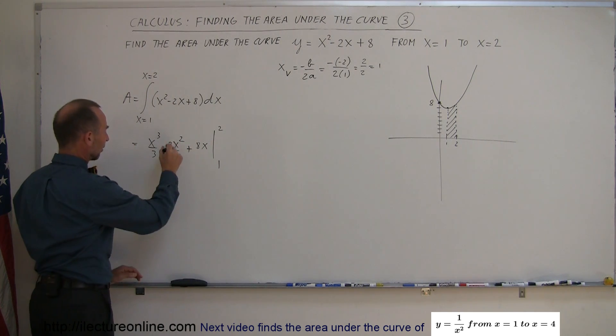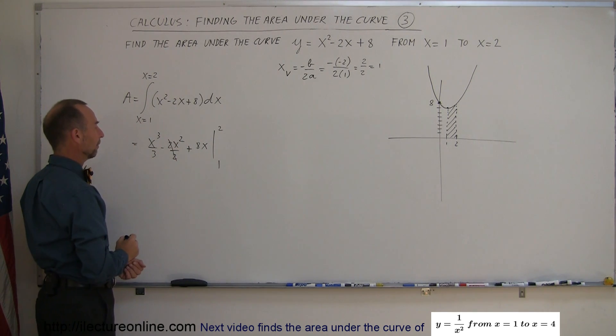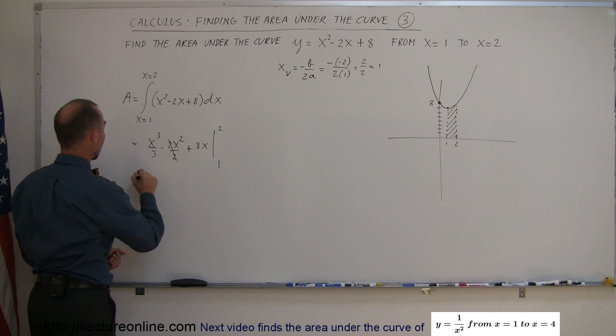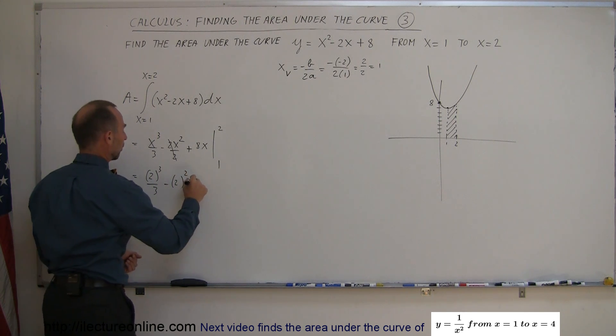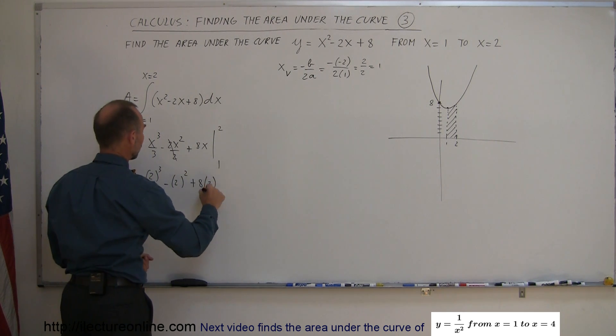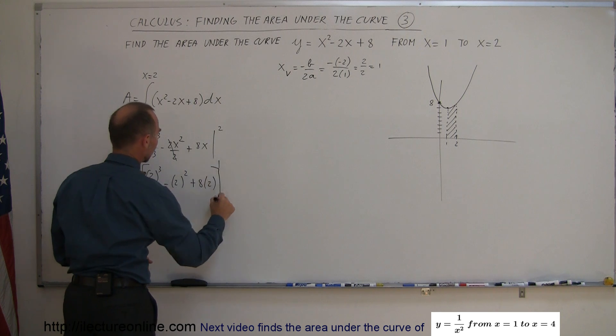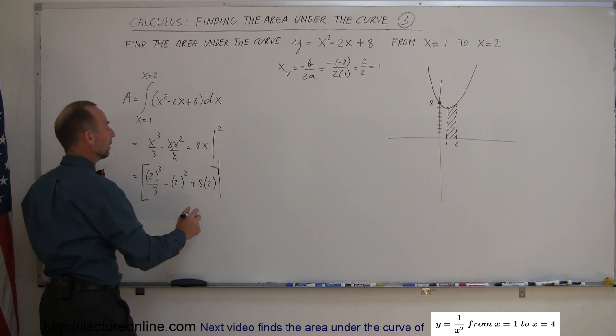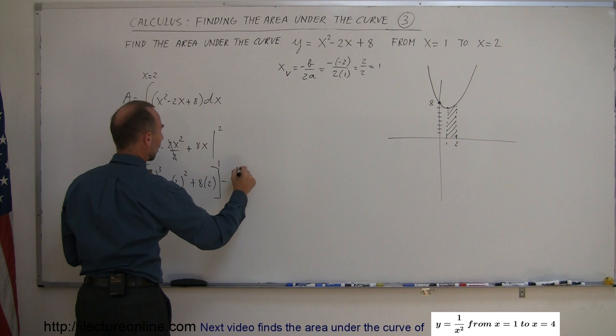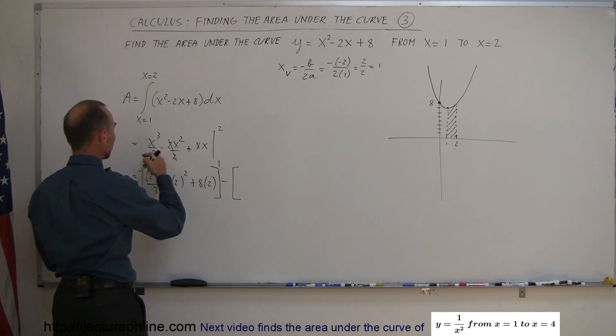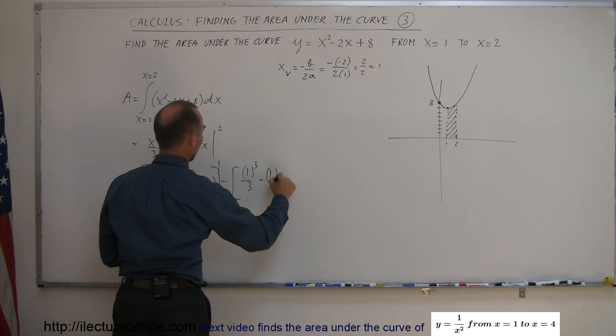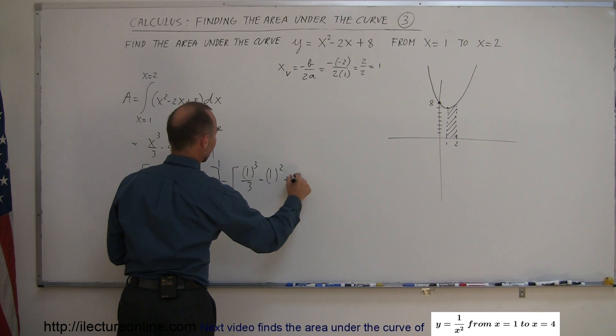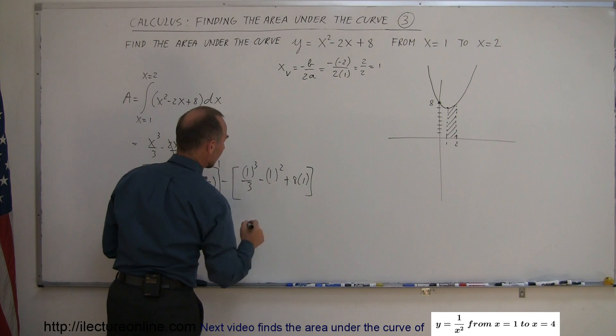Let's simplify this a little bit so the 2s cancel out. Now we plug in the upper limit. We get 2 cubed over 3 minus 2 squared plus 8 times 2. Let's put brackets around it. Then we subtract from that when we plug in the lower limit, which gives us 1 cubed over 3 minus 1 squared plus 8 times 1.